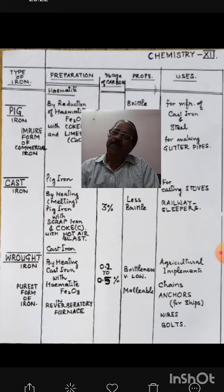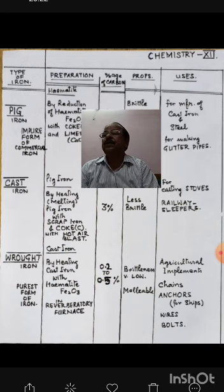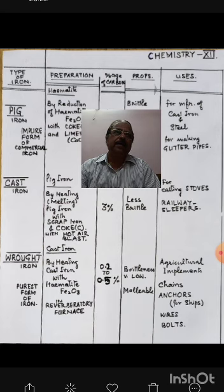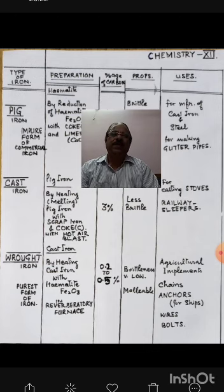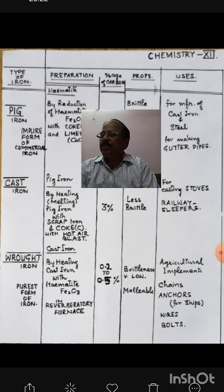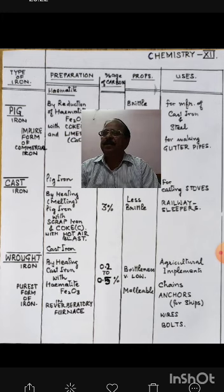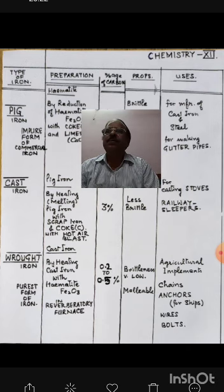The third type of iron is wrought iron, which is the purest form of iron. It is made from cast iron by heating cast iron with hematite — Fe2O3 — and both are heated in a reverberatory furnace, which is a special type of furnace. When we analyze wrought iron for carbon, carbon is only 0.2 to 0.5%. The hematite added to cast iron — which contains around 3% carbon — causes that carbon to take out oxygen from Fe2O3 and convert it to iron.